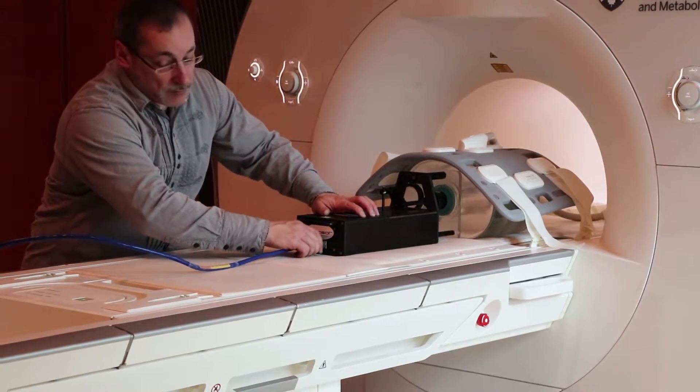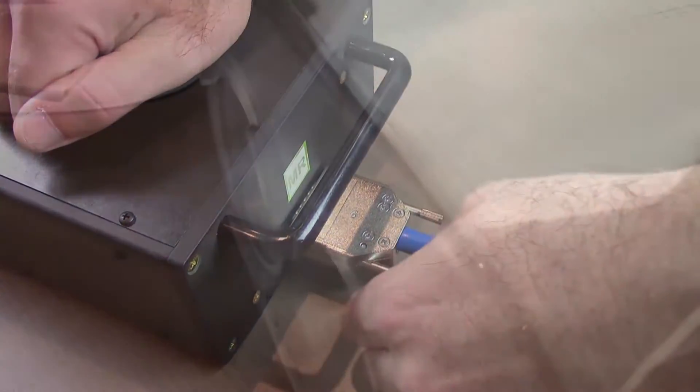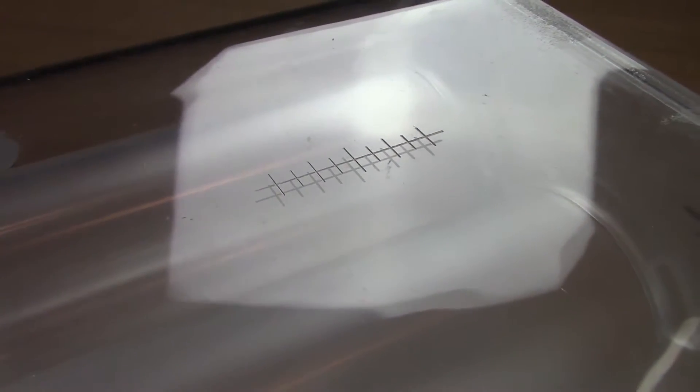Attach the blue motor cable to the motion unit and tighten the two thumb screws to prevent the cable from vibrating loose. At this point, you may use the laser marks etched into the oval body phantom to align the assembly with the MRI machine.